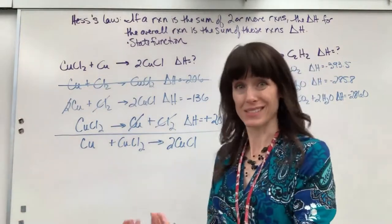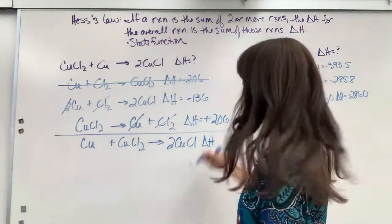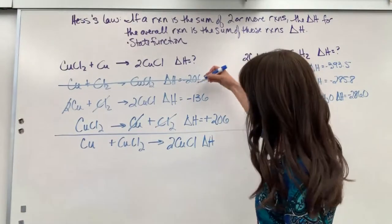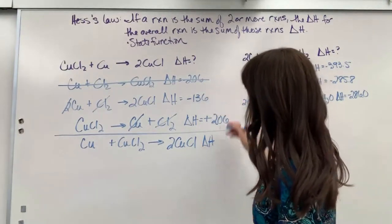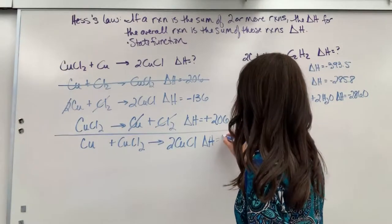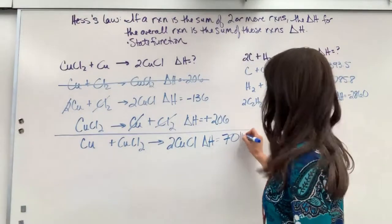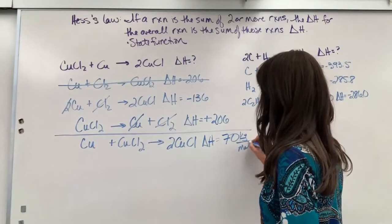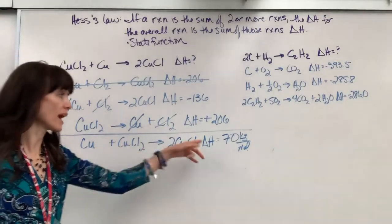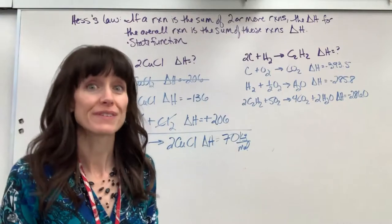Now the whole point of this was to find delta H. And this is the beautiful part. All you have to do is add those two together. So negative 136 plus 208, delta H is going to be 70. Yep, 70. Nice. And my unit kilojoules per mole. So the thermochemical equation, for this reaction to happen, we have to put 70 kilojoules into it. So there is your first example.